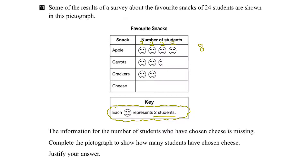Let's look at carrots. That smiley face would be two students, two students there. Now this one is a half smiley face, so that would be one student. So the grand total of students that like carrots as a snack is five.